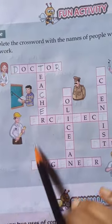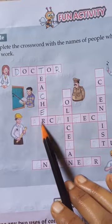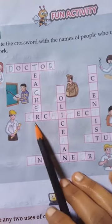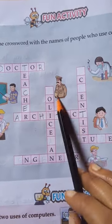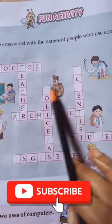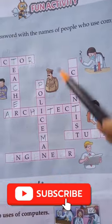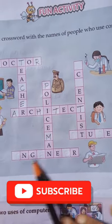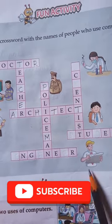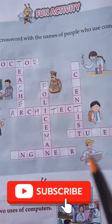What is this? This is called a person. Architect. What is this? Policeman. What's this? Engineer.